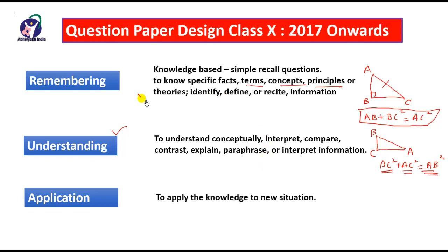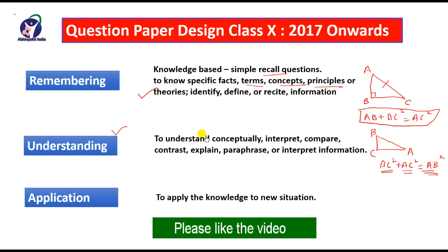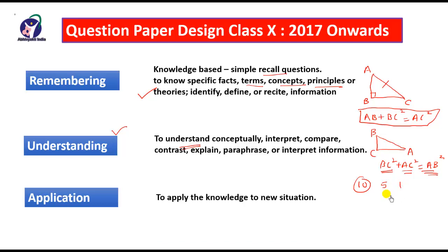The third parameter is application. You remember the knowledge, you can recall it, you understand it — but can you apply it? For example, you know addition and subtraction. If your father gives you 10 rupees to buy a pen and pencil, you buy a 5-rupee pen and a 1-rupee pencil, spending 6 rupees, leaving you with 4 rupees. Whether you can do this transaction in the market — that is the application of knowledge gained during class learning.